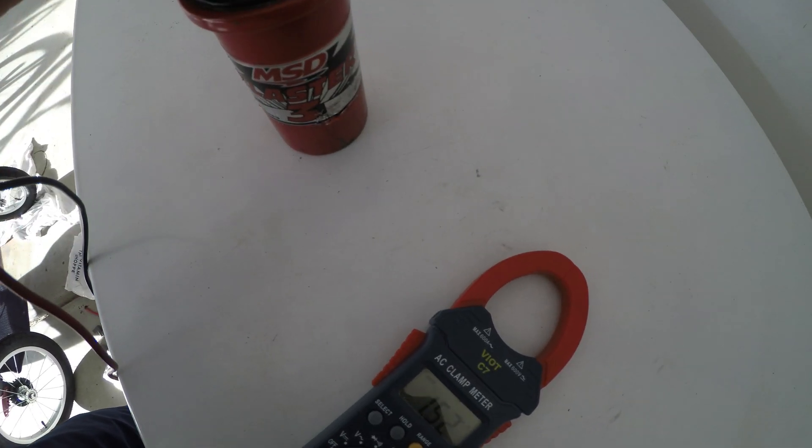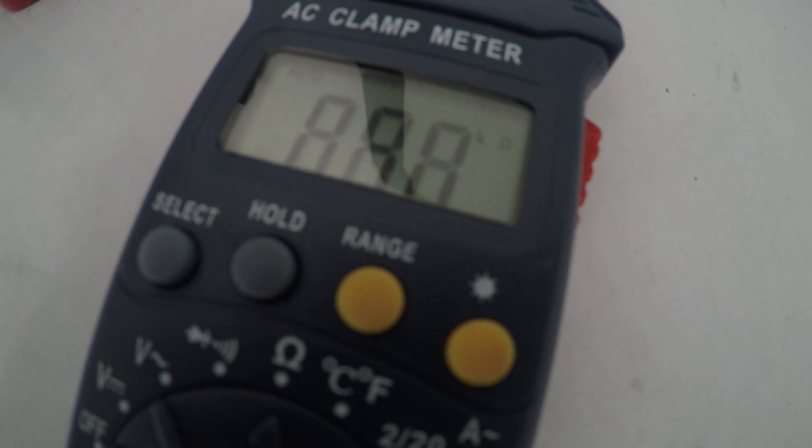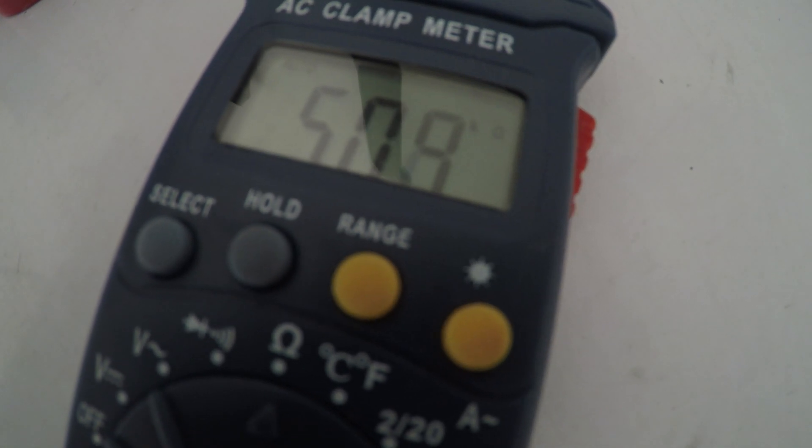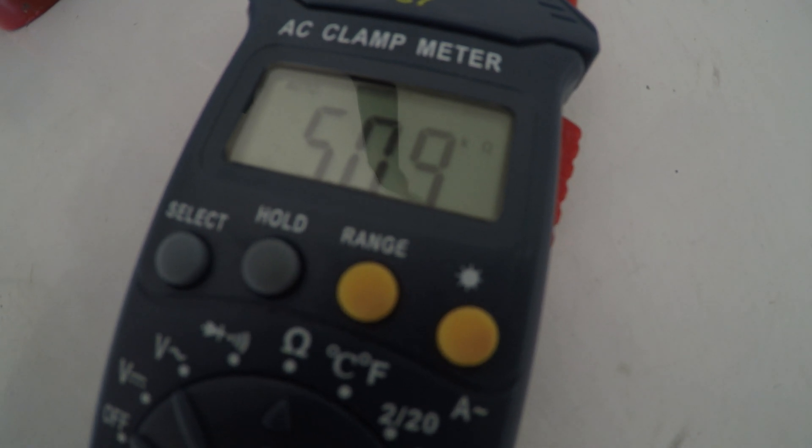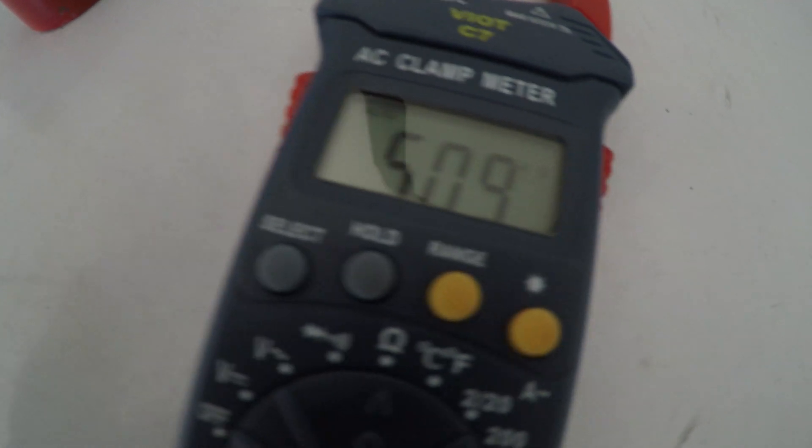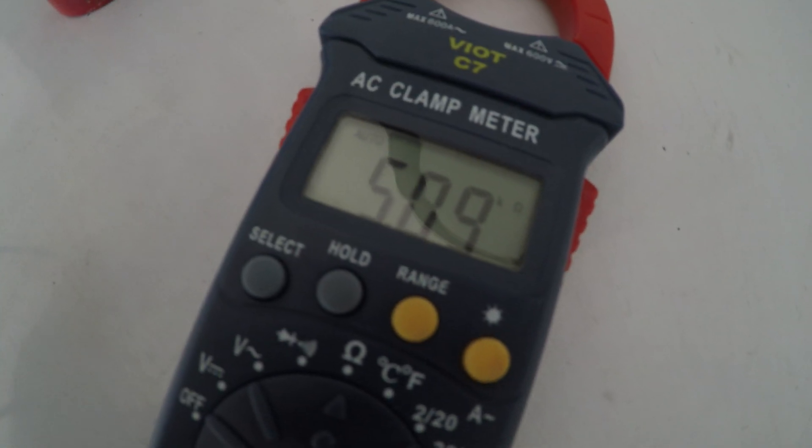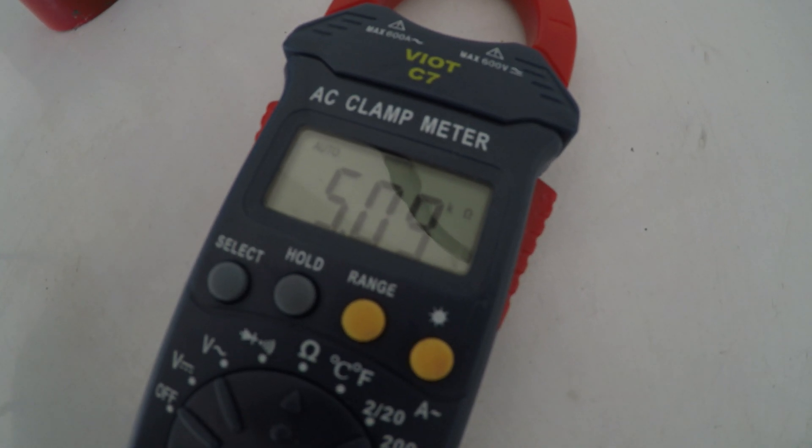As you can see here, there's a K up there because you should be reading high resistance for your primary to secondary. Secondary windings intensify everything by a lot, and this MSD Blaster 3 coil is rated at 5,000 on the secondary, and the one that I replaced it with, which is an Excel, is rated at 10,000, so I'm actually getting a stronger spark now.